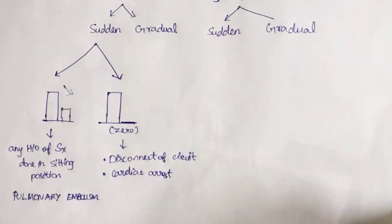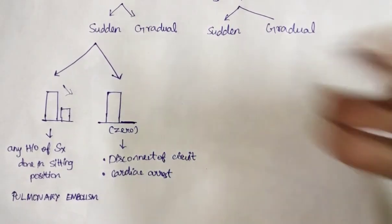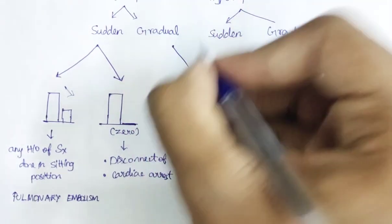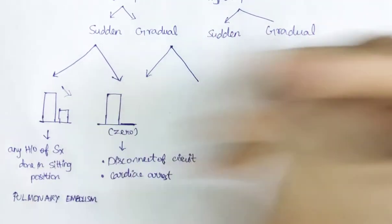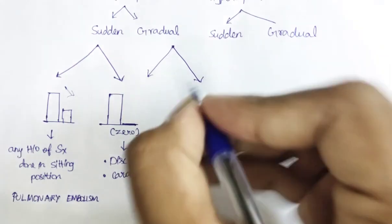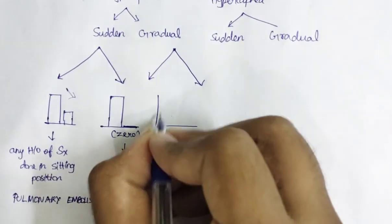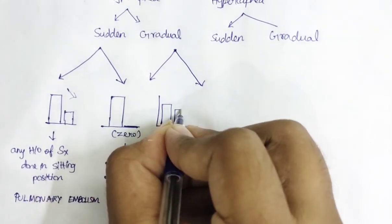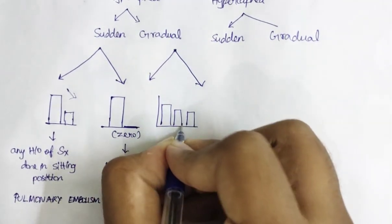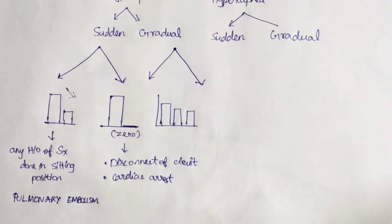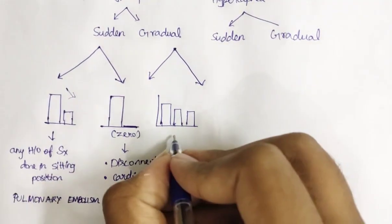Next, what if the EtCO2 gradually gets reduced? Let's draw the diagram first. This is what I meant: gradually getting reduced. There are two possibilities.